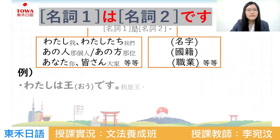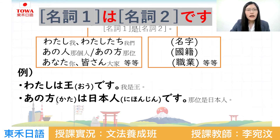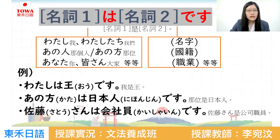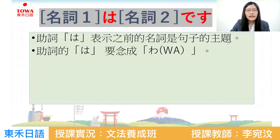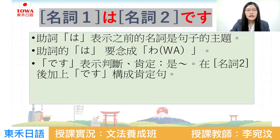あのひと、あの方（那位）、あなた（你）、皆さん（大家）等等。後面的名詞可以介紹名字、國籍、職業等等。例如：私の名字是王，我是王；あの方的國籍是日本人，那位是日本人；職業他是佐藤さん，是会社員，公司職員。